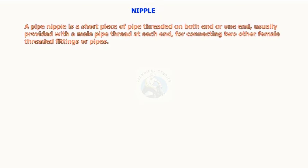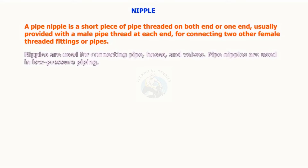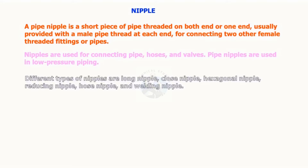A pipe nipple is a short piece of pipe threaded on both ends or one end, usually provided with a male pipe thread at each end for connecting to other female threaded fittings or pipes. Nipples are used for connecting pipe, hoses, and valves. Pipe nipples are used in low pressure piping. Different types of nipples are: long nipple, close nipple, hexagonal nipple, reducing nipple, hose nipple, and welding nipple.